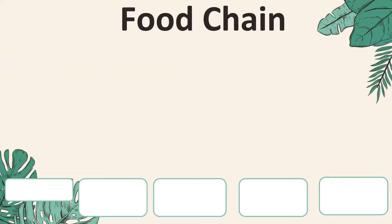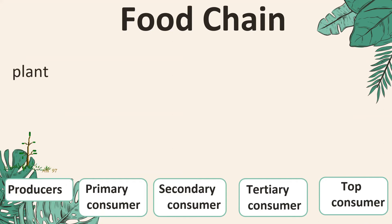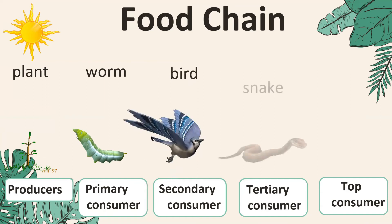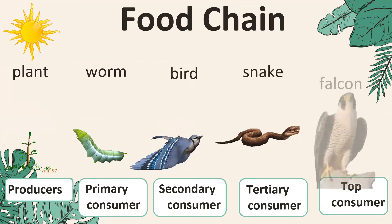To draw a food chain, we start from the producer, then the primary consumer, to the secondary consumer, to the tertiary consumer, until we get to the top consumer. For example, a plant uses light energy from the sun to make food, then a worm eats leaves from the plant.